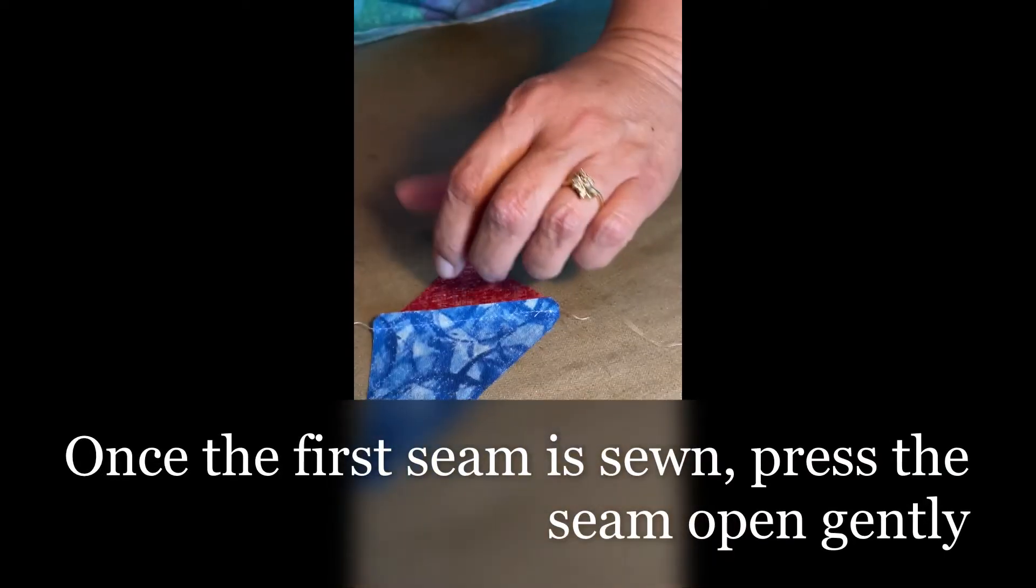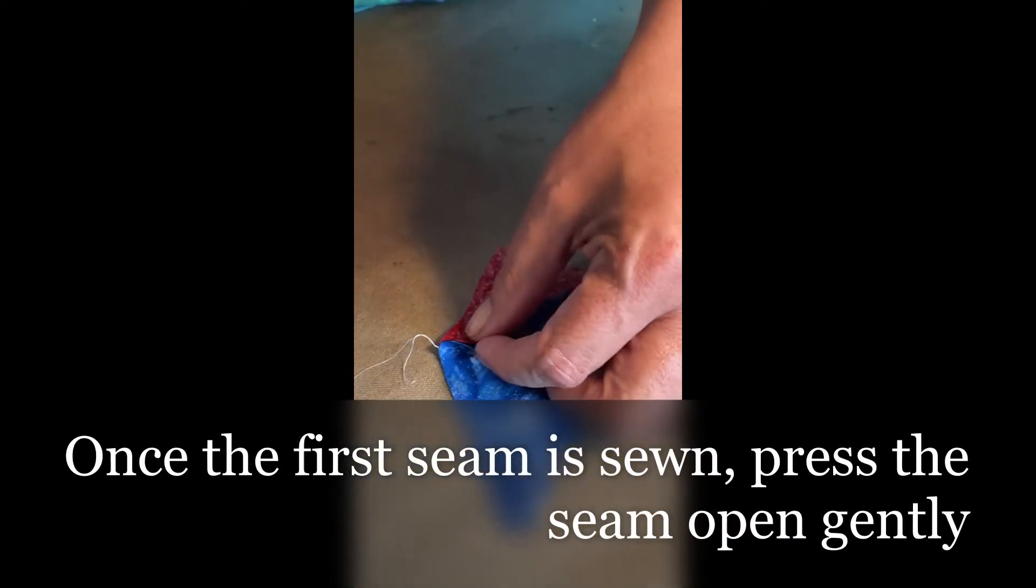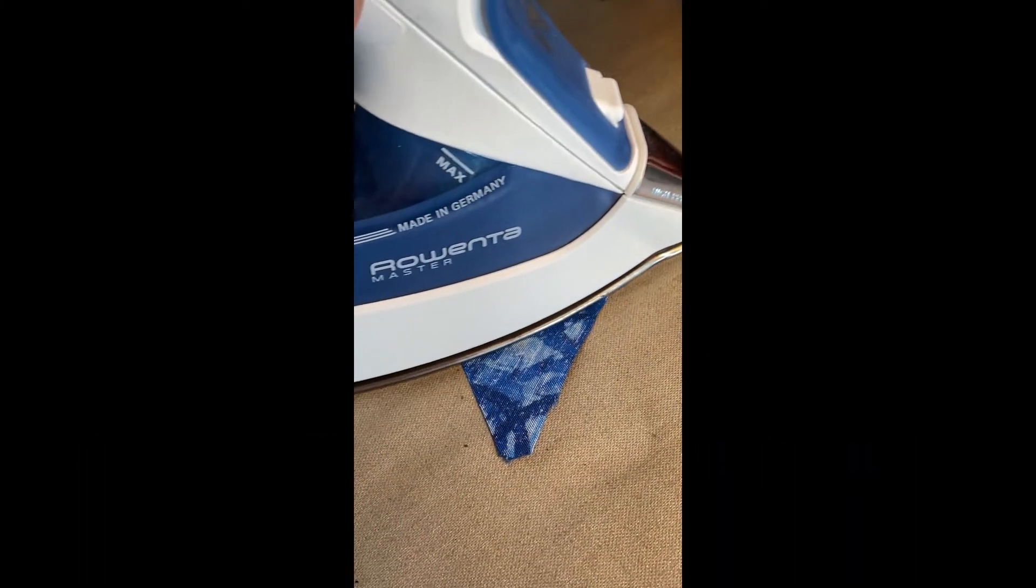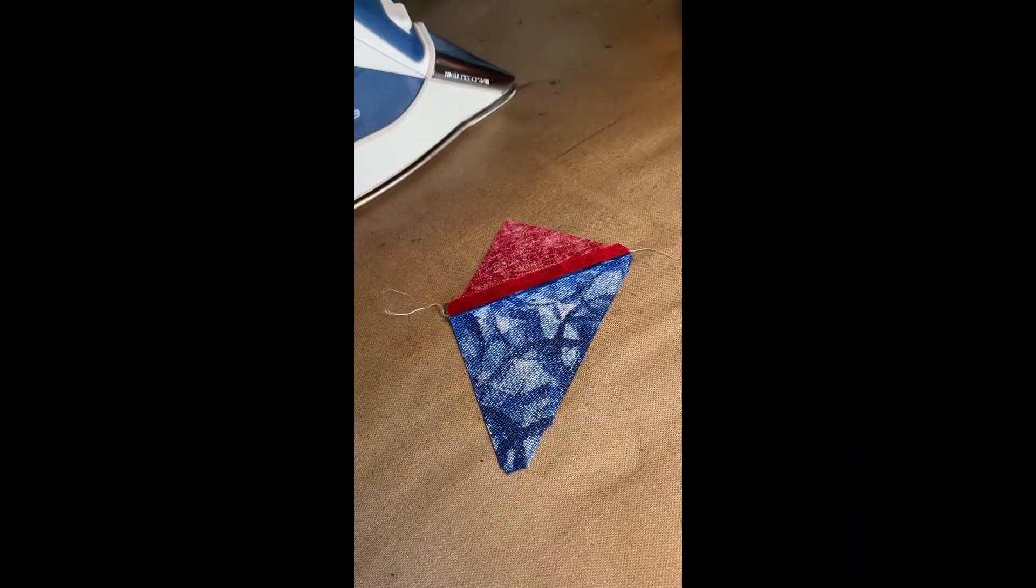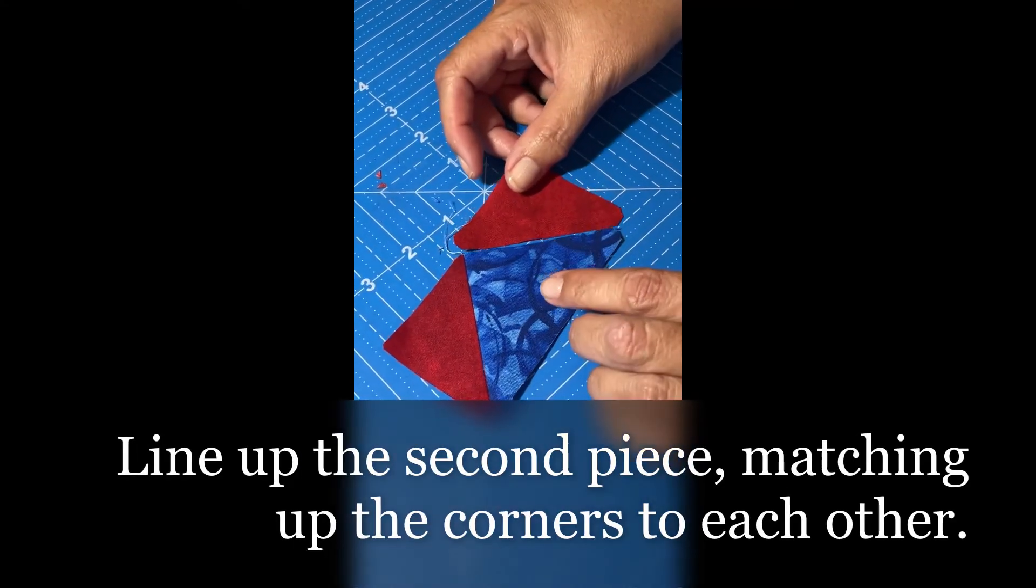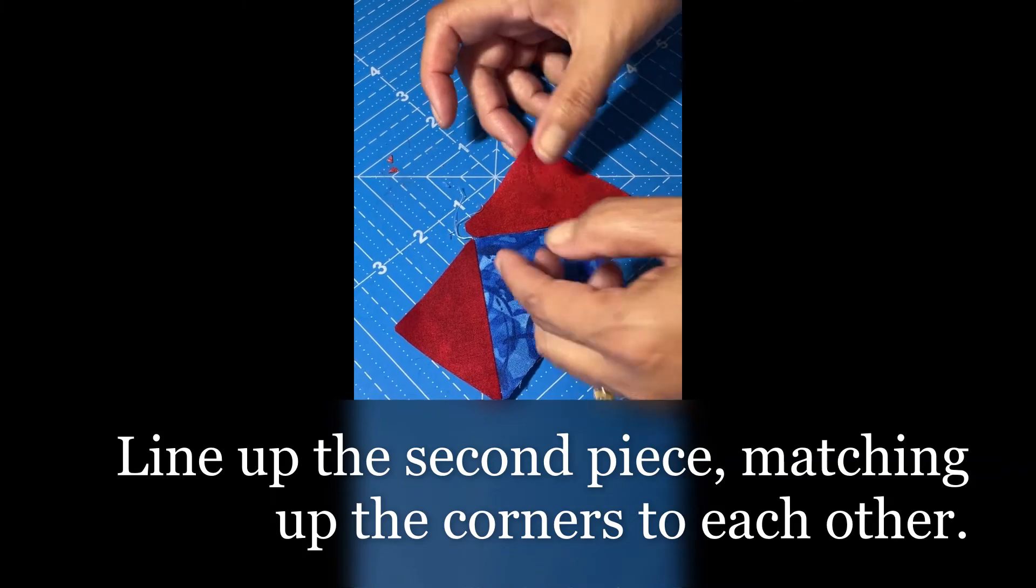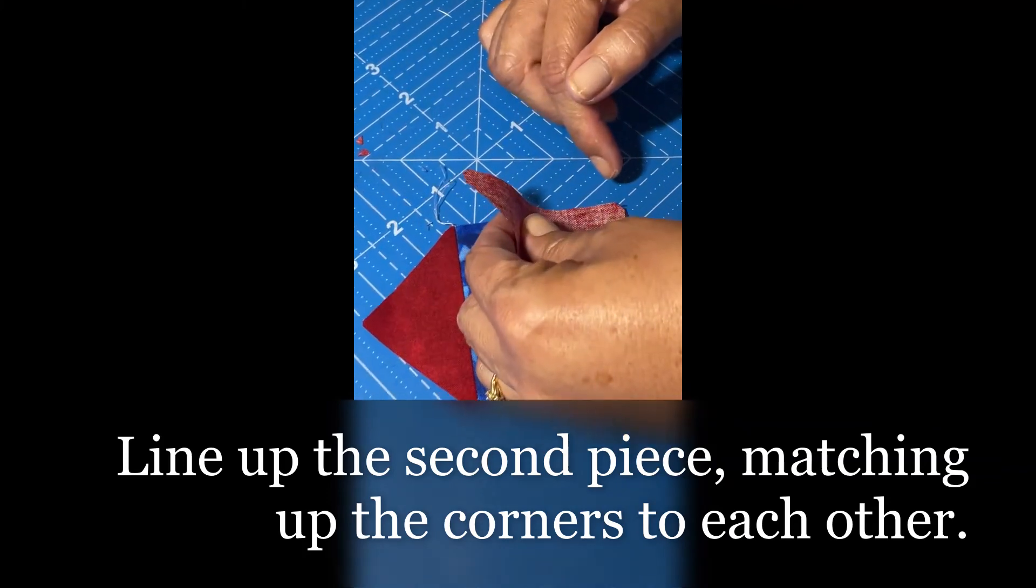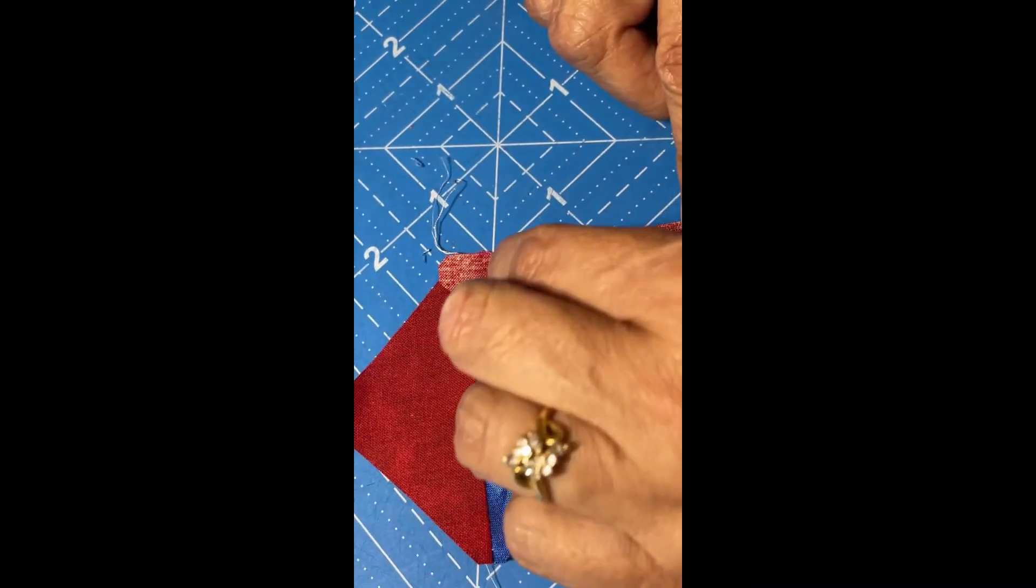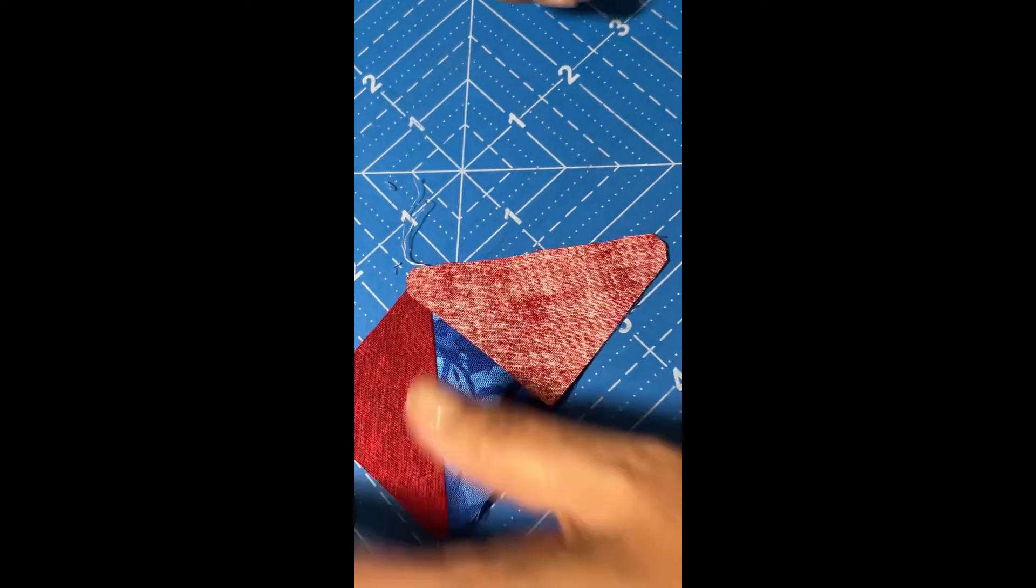I sew the first one over and then I like to press my seams open. All right, now I've got one on. I'm going to sew the second one on and I again match up the ends there and I sew it.